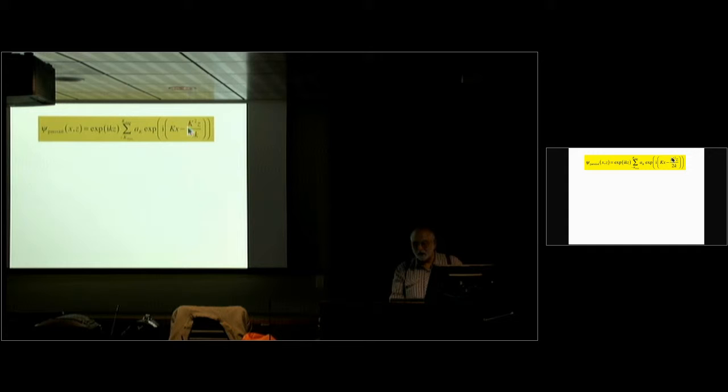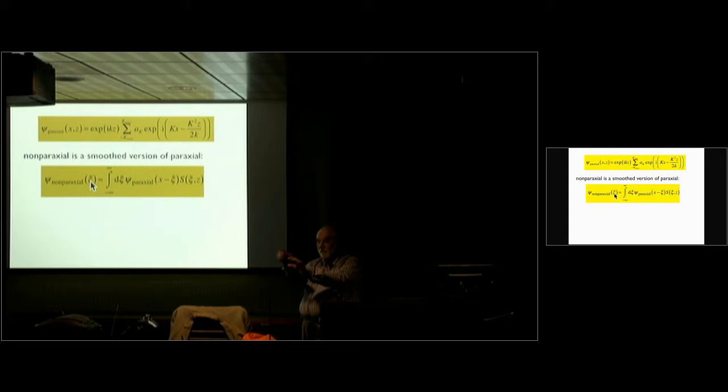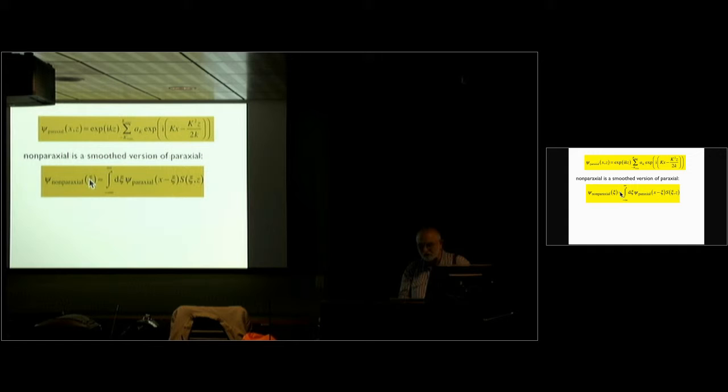The paraxial approximation ignores that correction term and you'd think it's good if k_max is very much less than k. So this is paraxiality — k² times propagation — and non-paraxial is a smooth version of paraxial; it's a convolution. The non-paraxial case, just including that first correction — you can do it exactly with all of them, but let me just take the quartic correction — non-paraxial as a function of the unquartic ψ is the smooth paraxial with some smoothing function.